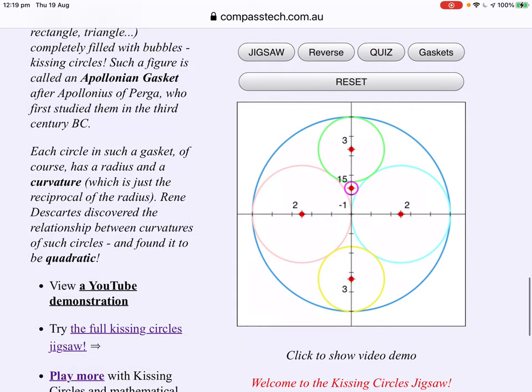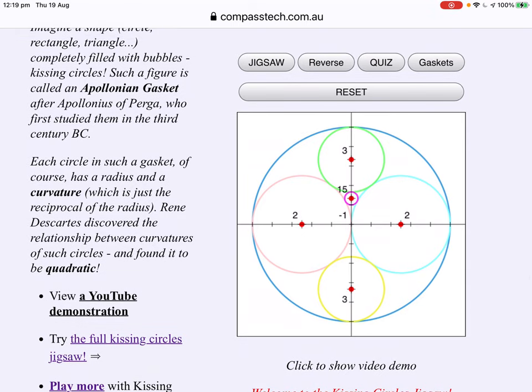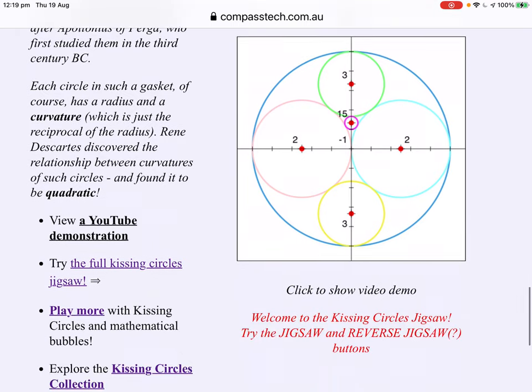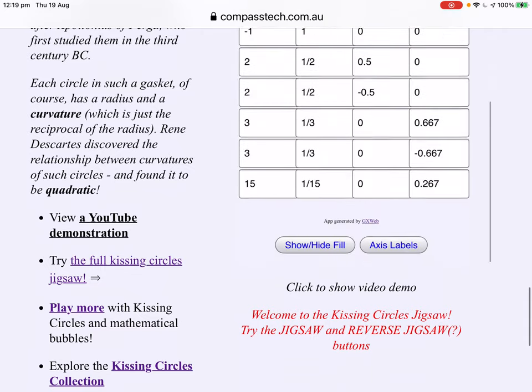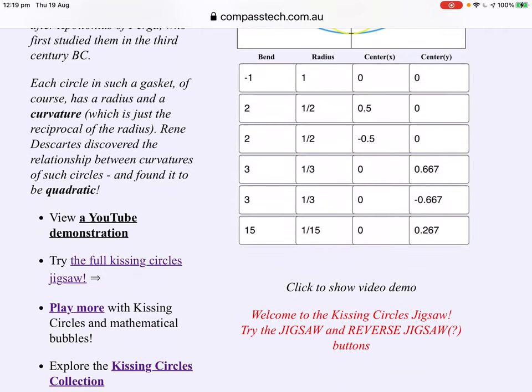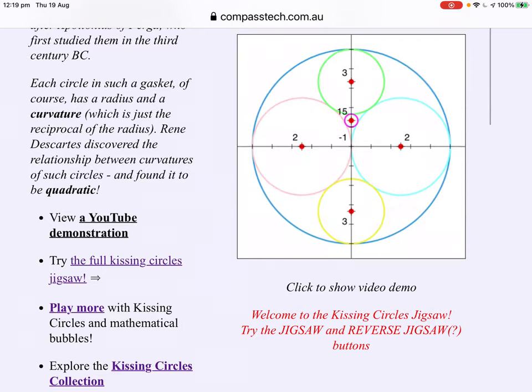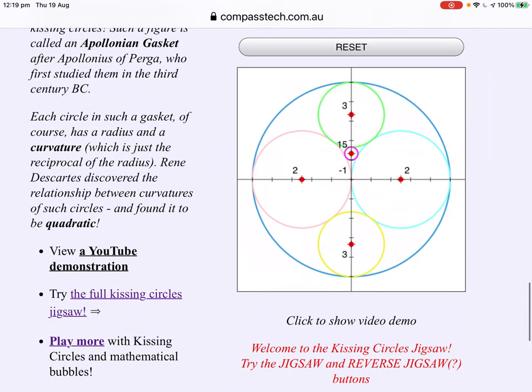There is always a lovely pattern of numbers. In this case, the larger outside circle. Let's have a look at the values. The bend, or curvature, is the reciprocal of the radius, and it's an easier way to think about these. If you look at the pattern here, minus 1, 2, 2, 3, 3, 15, these are the circles that will fit.